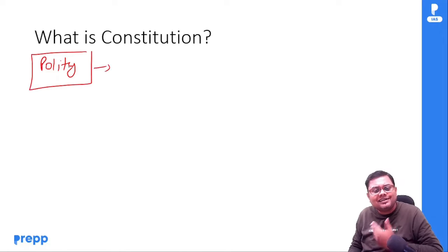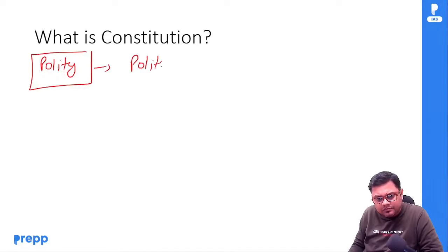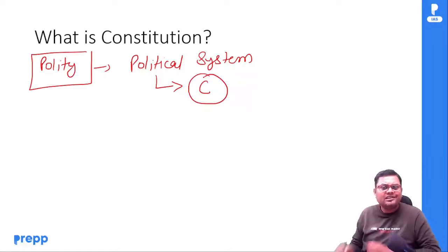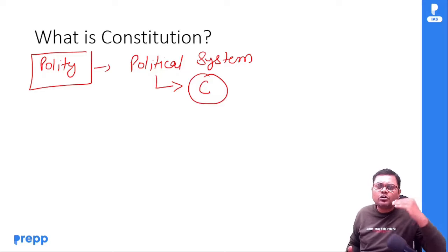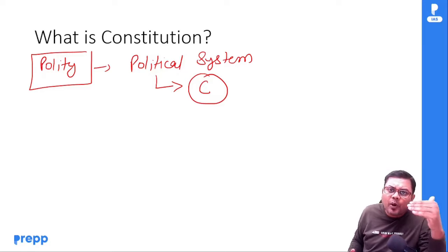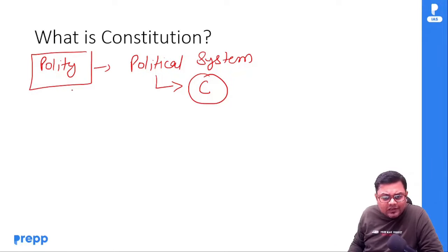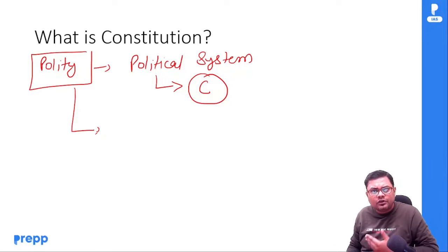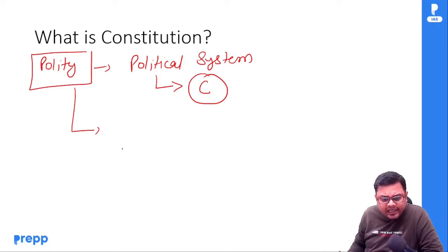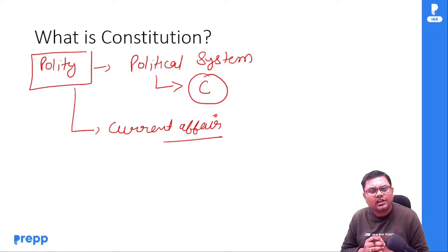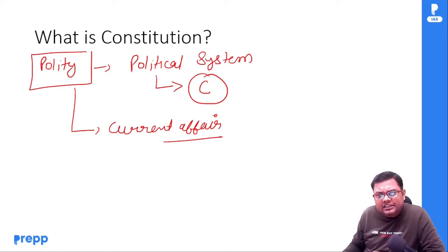A political system is based on constitution। इसलिए polity में constitution के different provisions को समझना बहुत ज़रूरी है। But polity में काफी कुछ dynamic part भी पढ़ना पड़ता है, और उसके लिए current affairs important है। तो polity का scope यह रहेगा। अब हम बात करते हैं कि what is constitution? तो शुरुवात करते हैं football से।